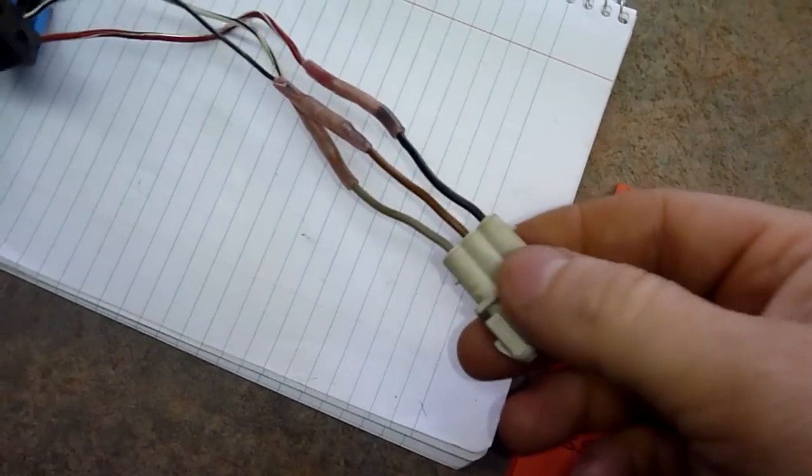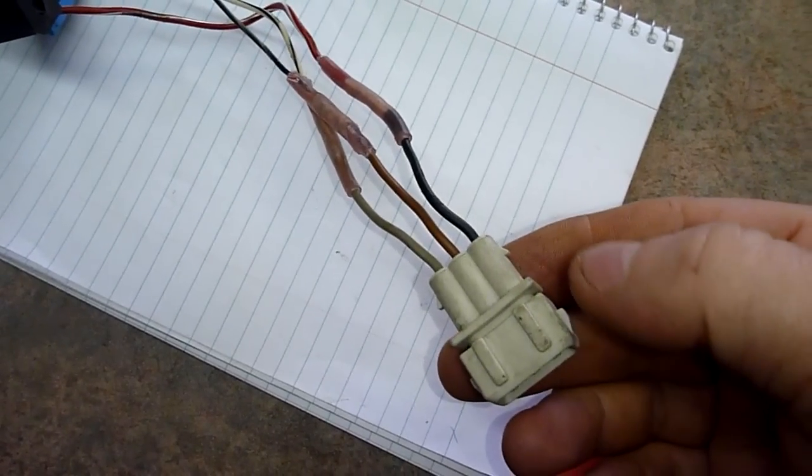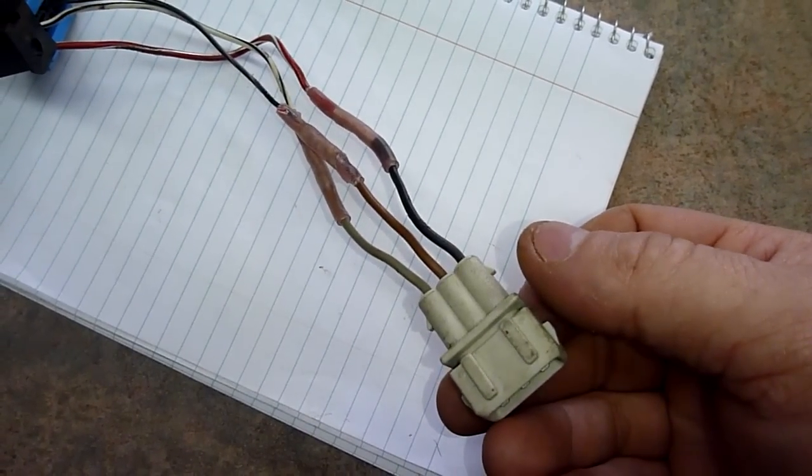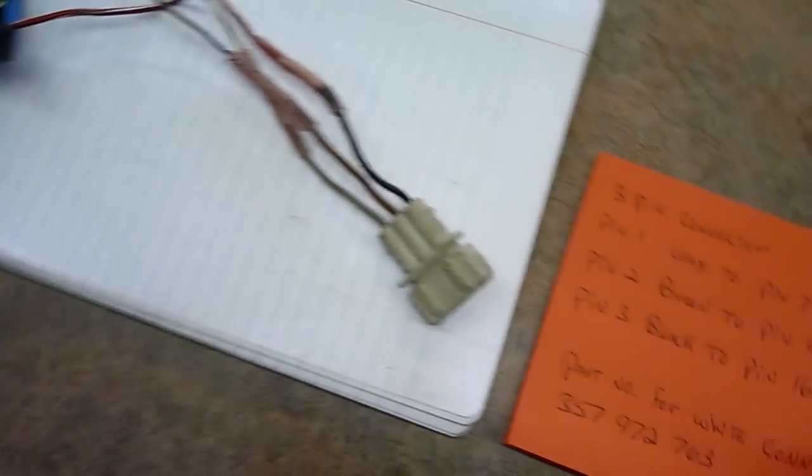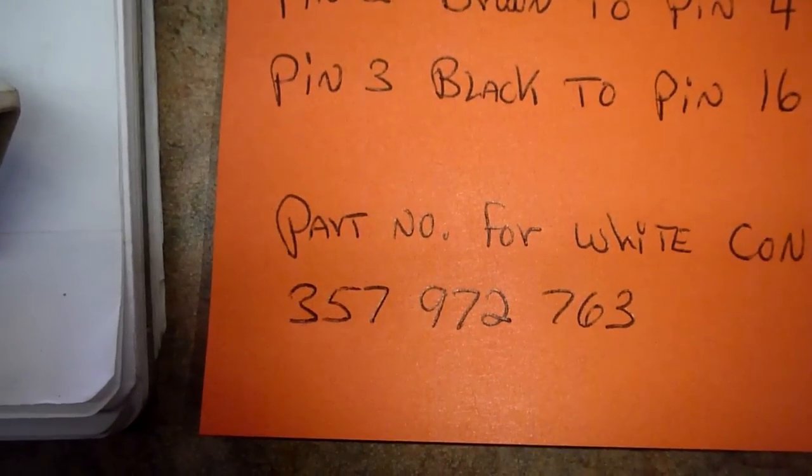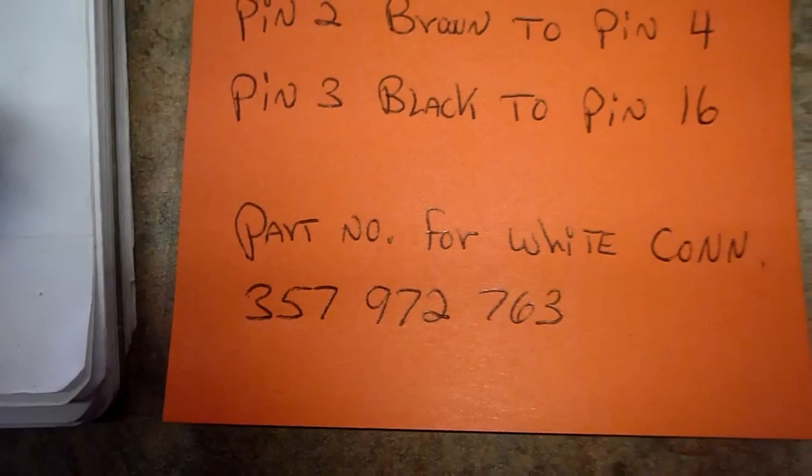So what I did, this is actually a connector that is for a turn signal for a Volkswagen, like a Mark II or a Passat. The correct part number for this flat connector is a 357-972-763. It's a white connector and it's got three pins.